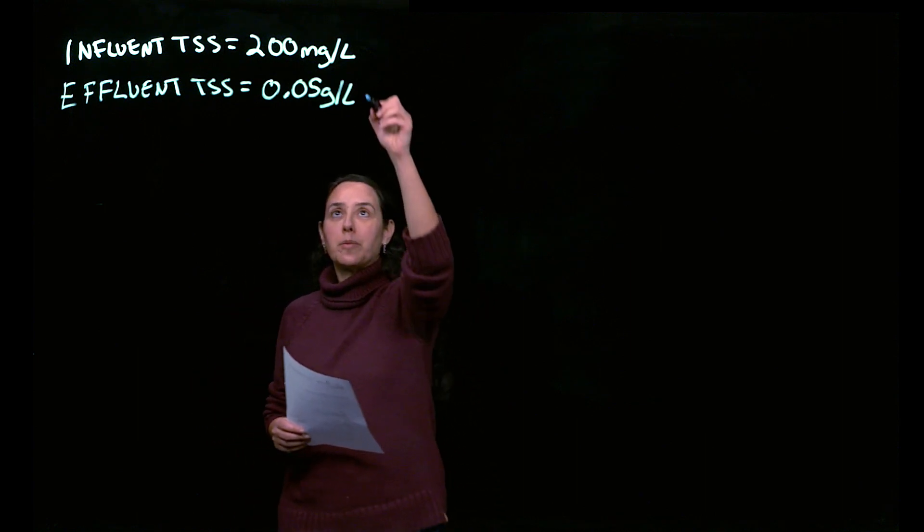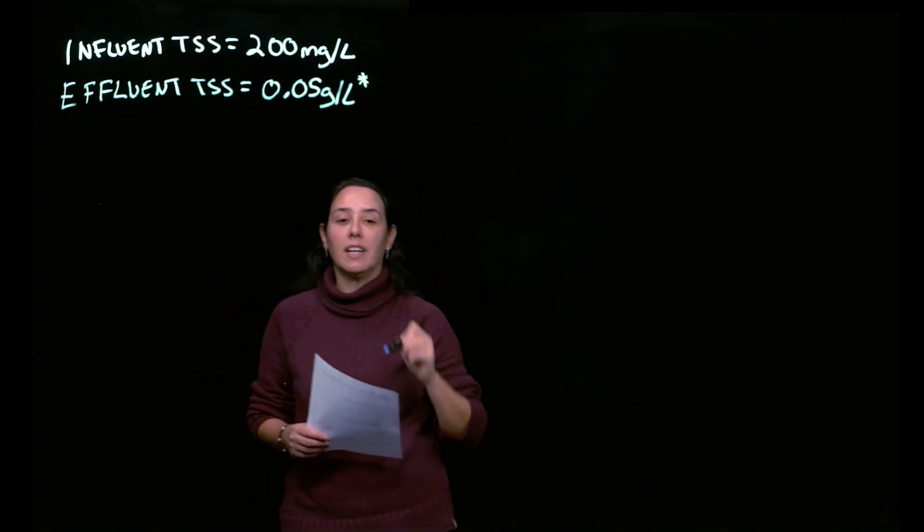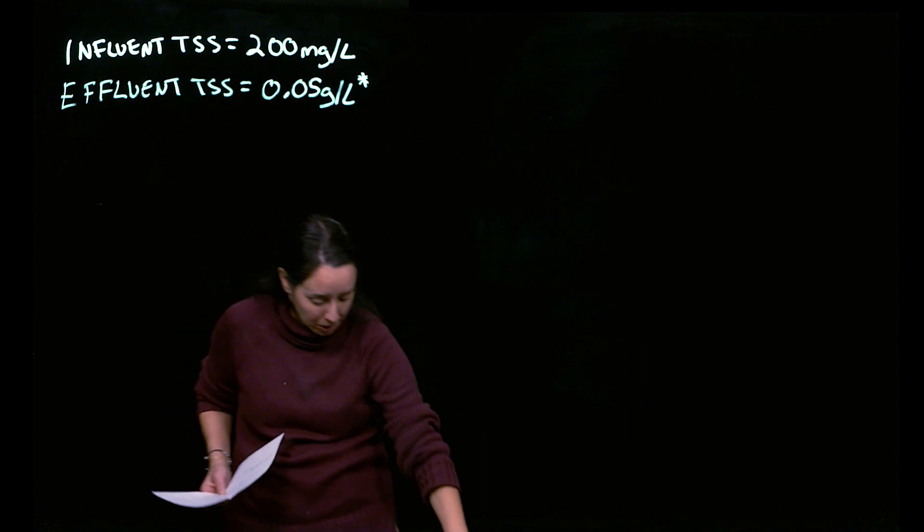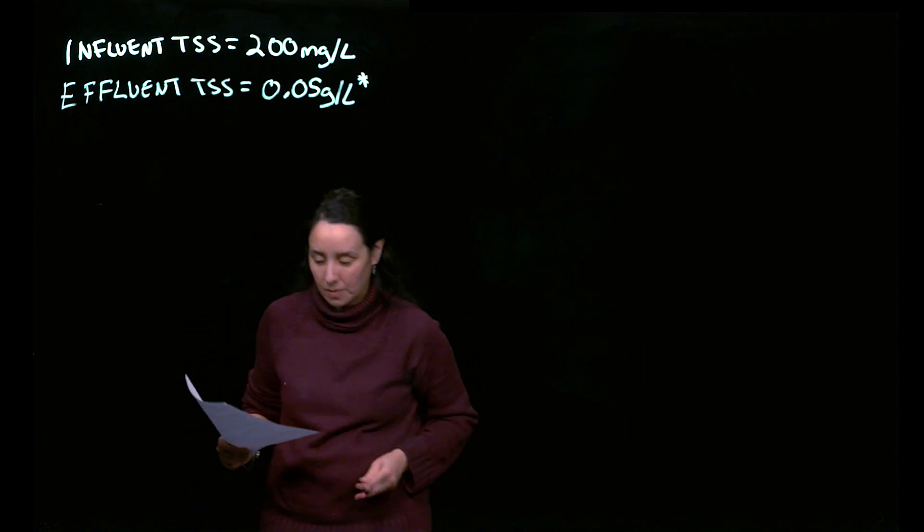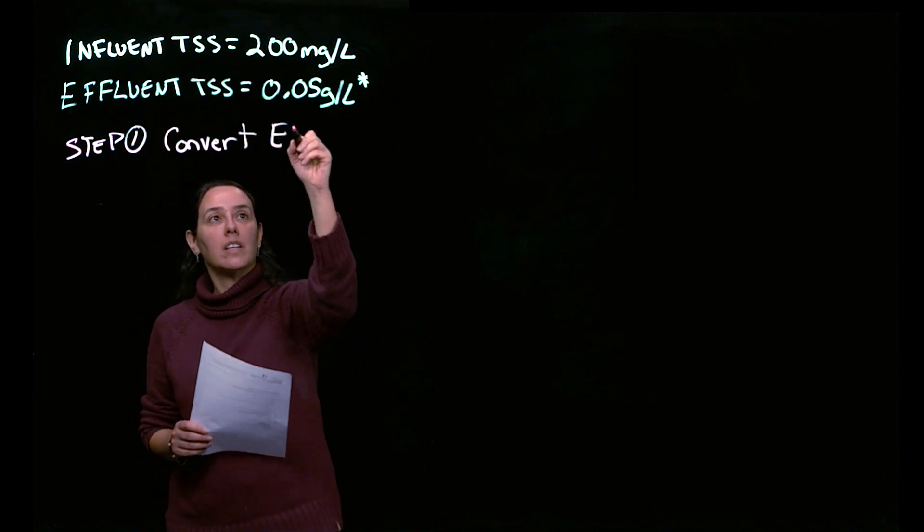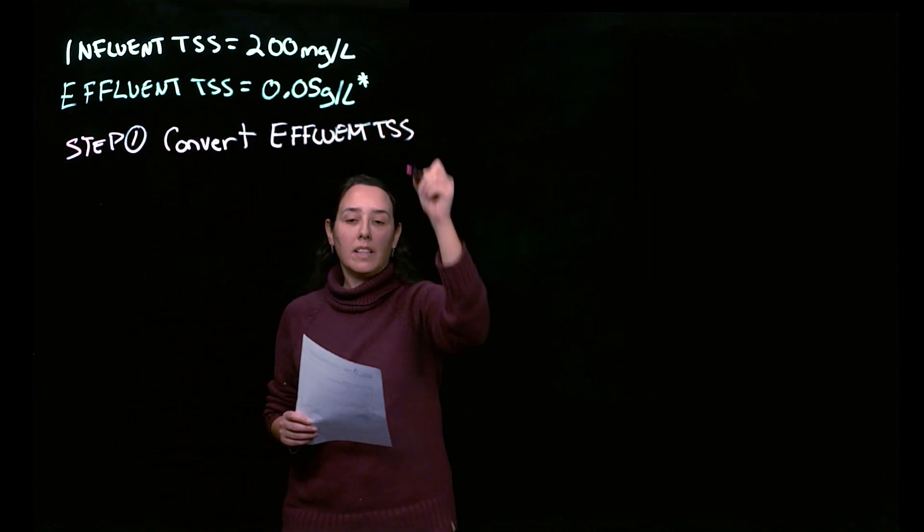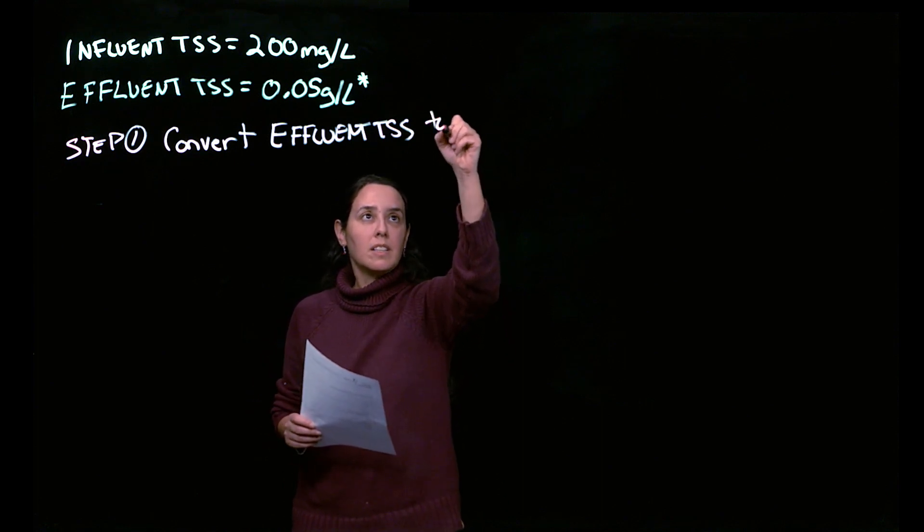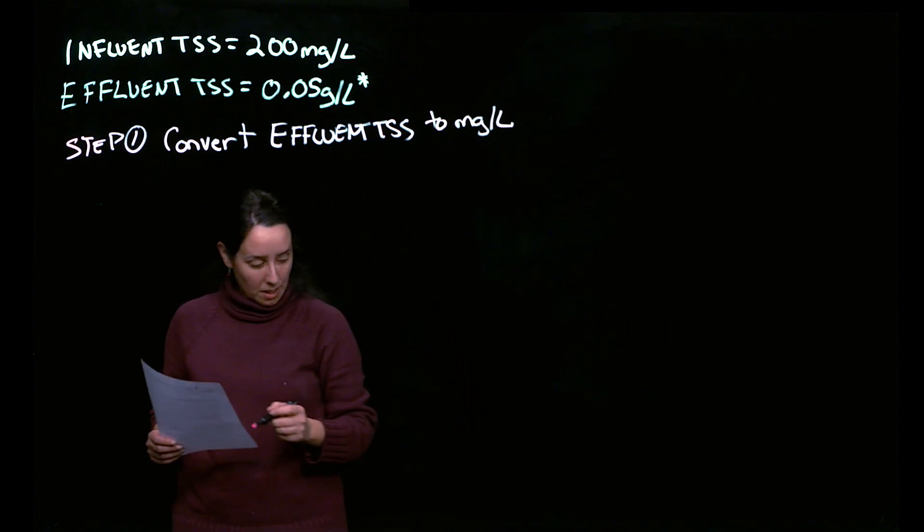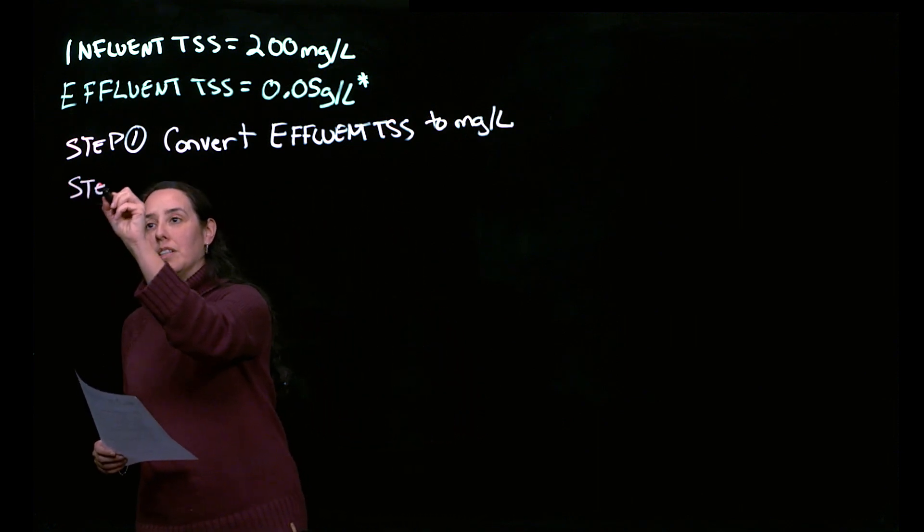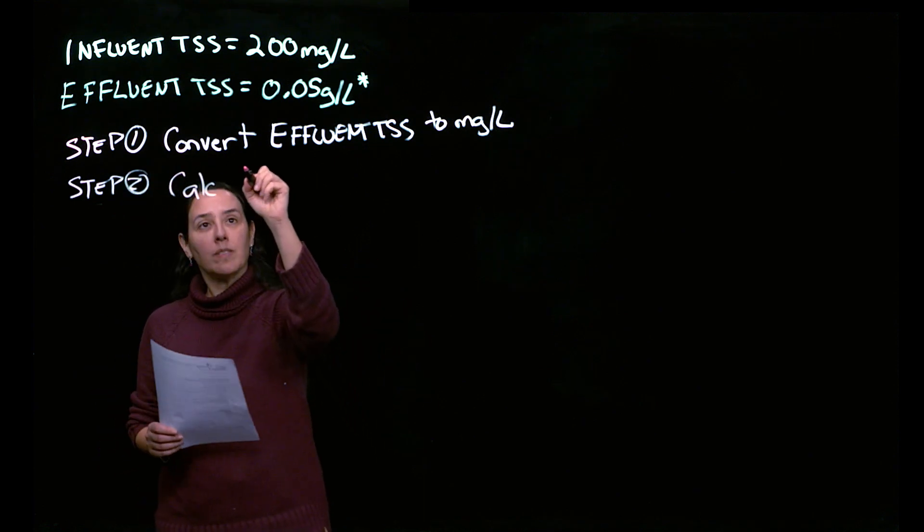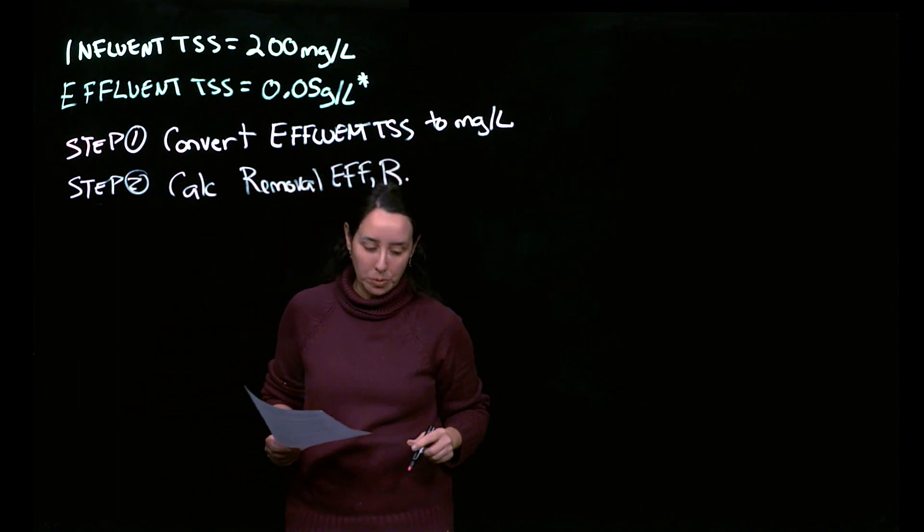So we're going to solve this in two steps, because the first thing we notice is that the grams per liter is not the same as the milligrams per liter. So the first step, step one is to convert the effluent TSS to milligrams per liter. And then for step two, now we'll just calculate that percent removal efficiency, which we call R.